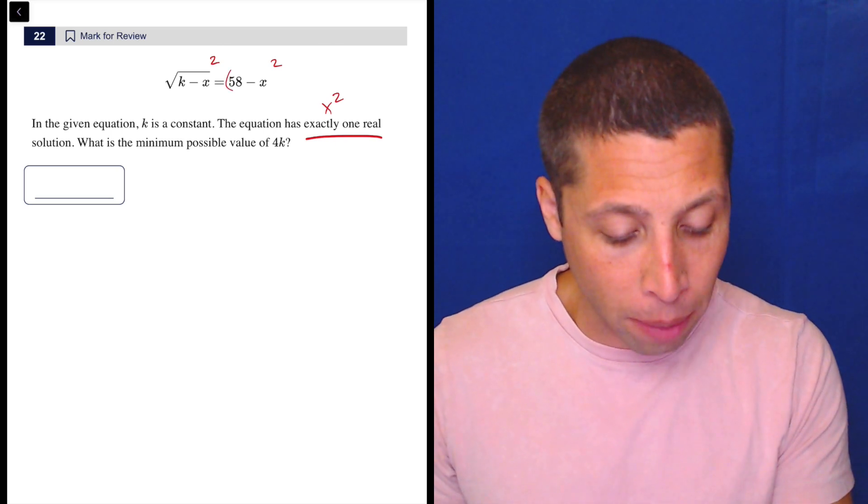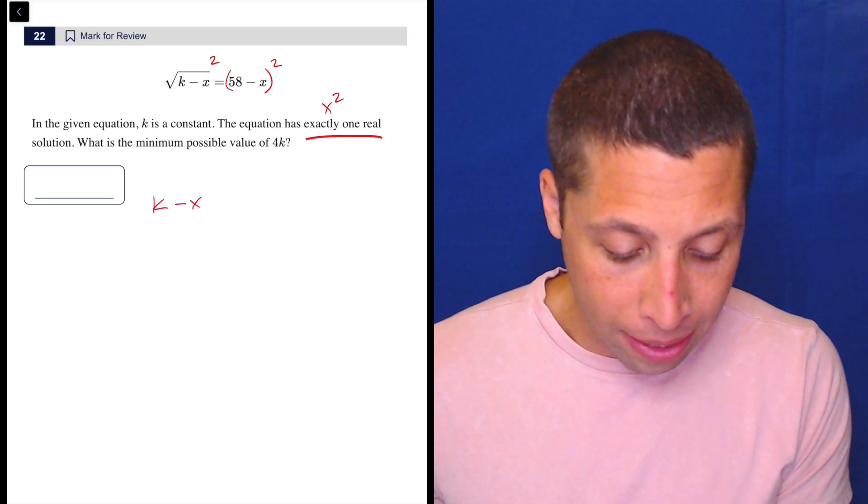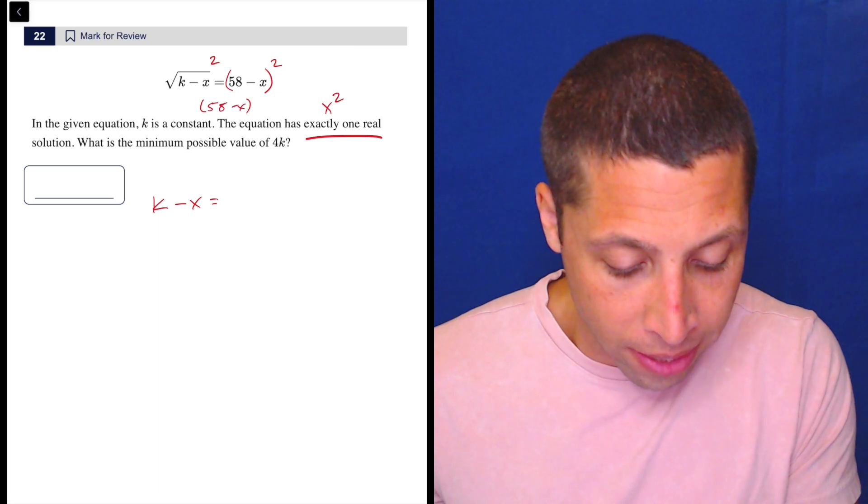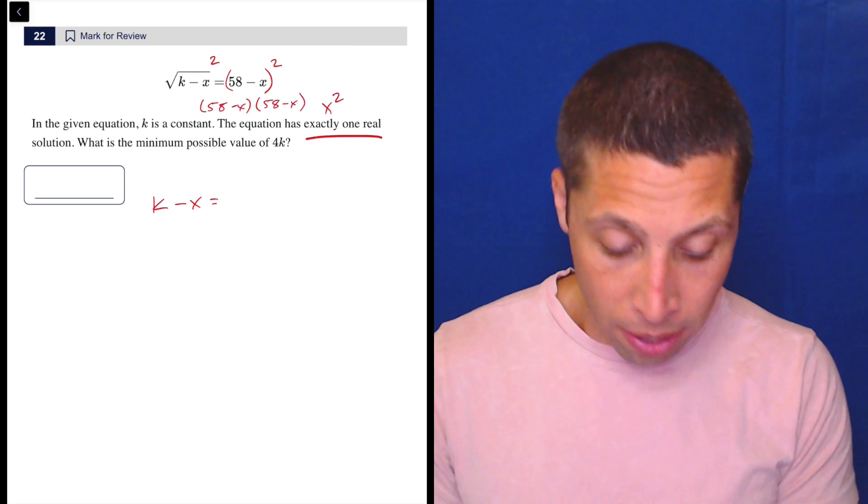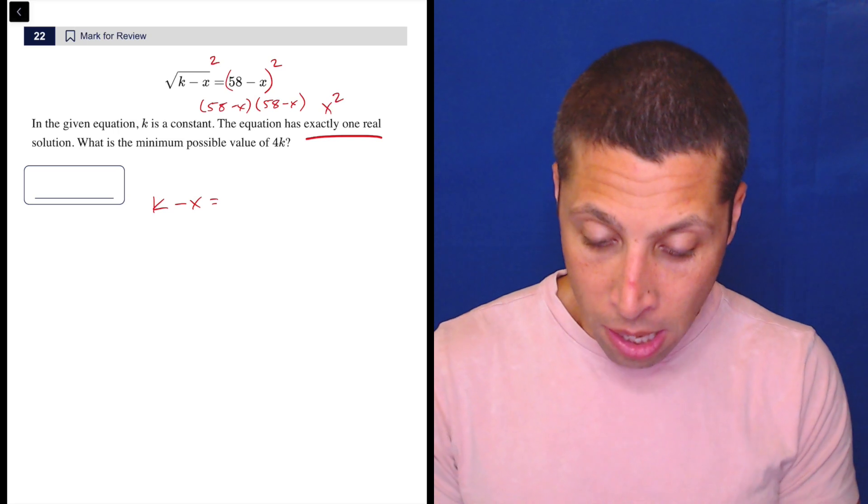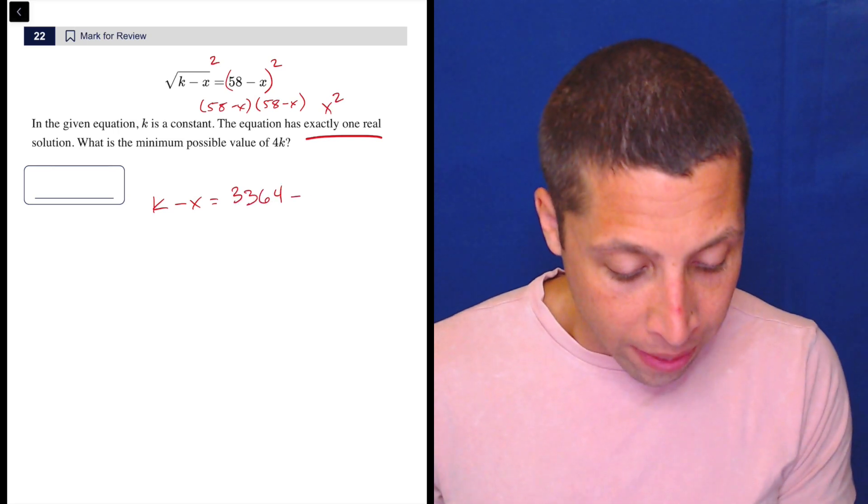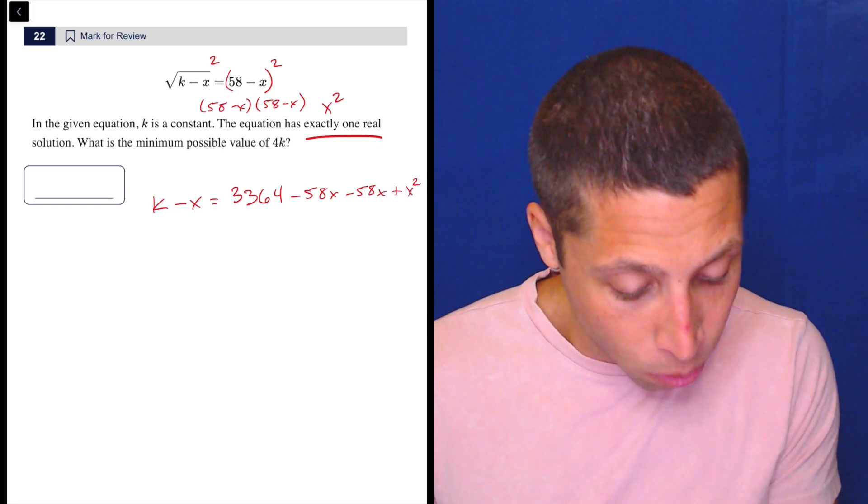So, let's do that first. Let's clean this up. We've got to make sure we foil correctly, all that stuff. So, we're going to get k minus x is equal to, so this is 58 minus x times 58 minus x. So, that's 58 squared is 3364.